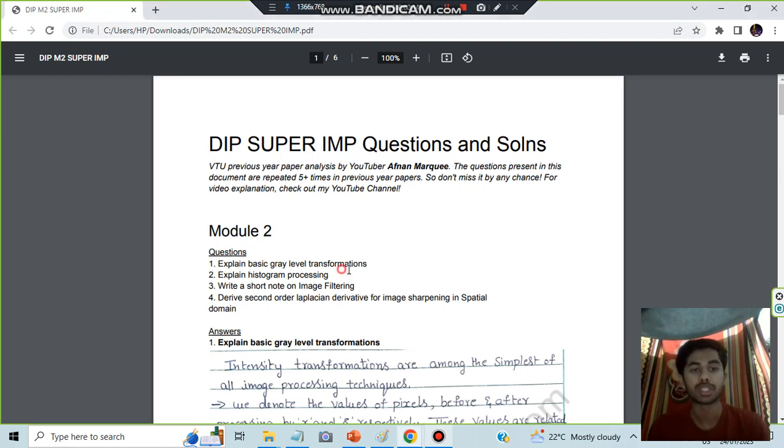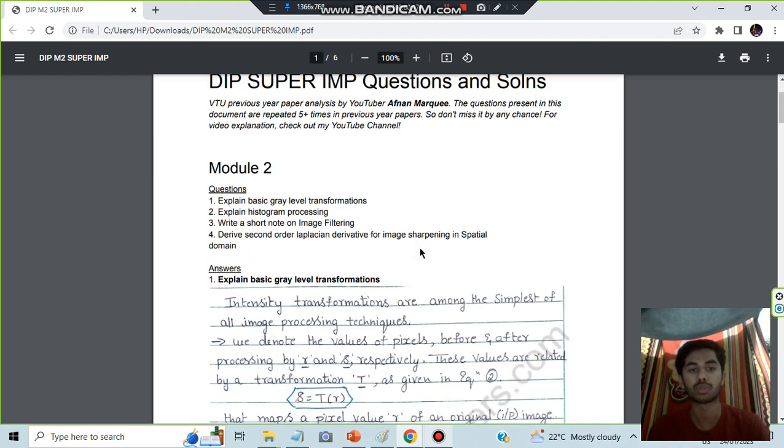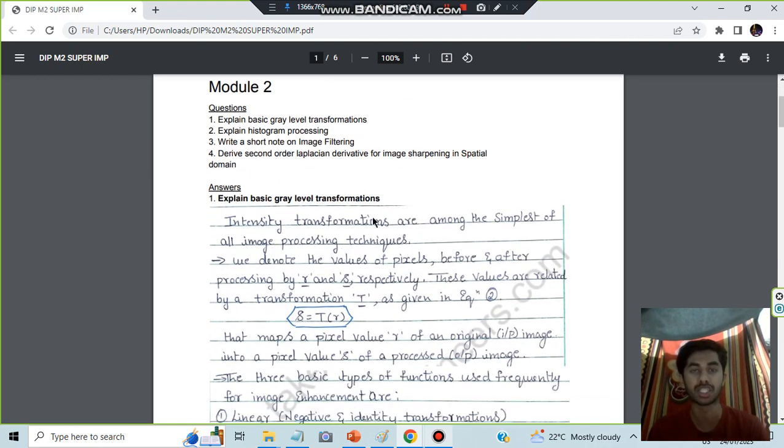The first question is to explain the basic gray level transformation. Here what you have to do is write about what the transformations are about, and then you have to write about the R and S values.